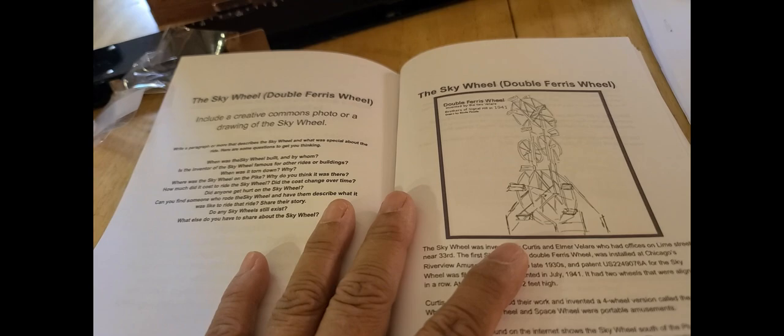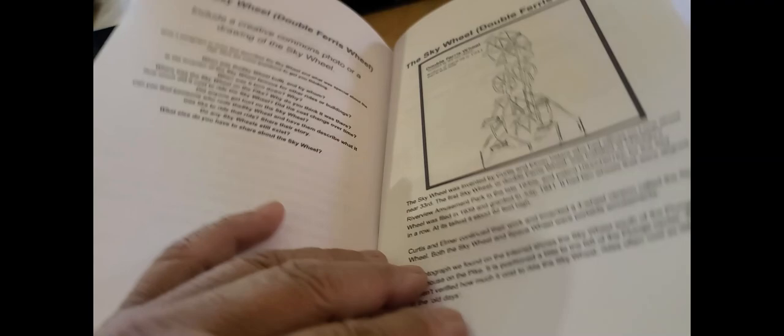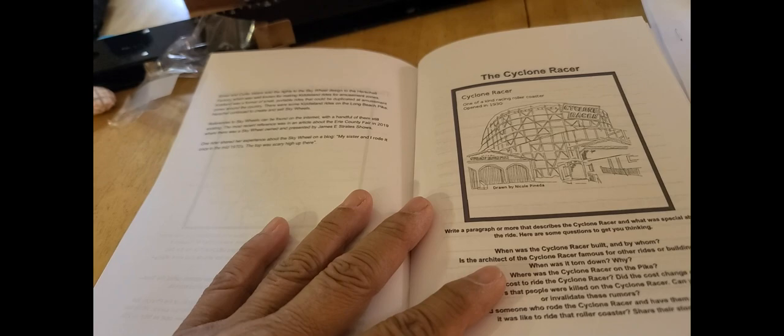Nicole Pineda, high schooler at the time, now in college, had drawn us an image of the double Ferris wheel that we can use. I did some research about the Sky Wheel and its connection to Long Beach. It was actually on the Pike, and the inventors Elmer and Curtis Villar lived in Signal Hill.